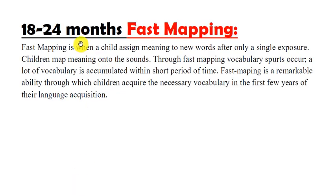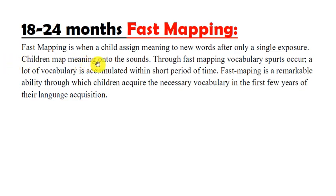Around 18 to 24 months, fast mapping also occurs. Fast mapping is when a child assigns meaning to new words after only a single exposure. Children map meaning onto sounds through fast mapping, and vocabulary spurts occur — a lot of vocabulary is accumulated within a short period of time. Fast mapping is a remarkable ability through which children acquire the necessary vocabulary in the first few years of their language acquisition.